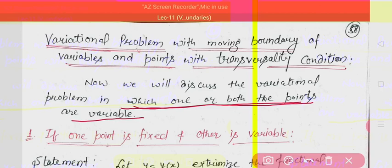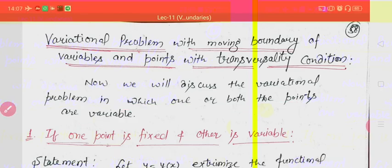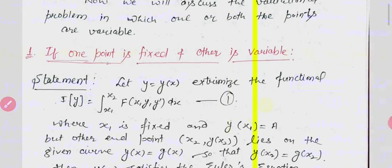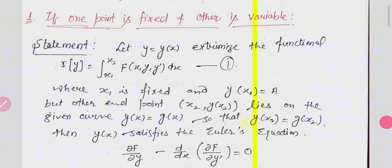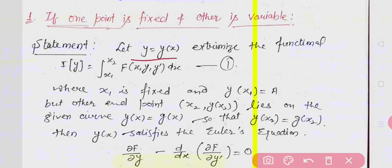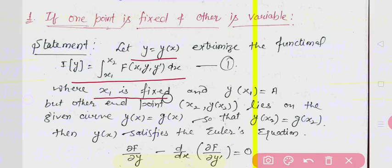So the first case we will discuss is where one point is fixed and another point varies. We assume that y is the extremum of the functional I[y] = integral from x1 to x2 of f dx, where x1 is fixed and the value of y at x1 is given.